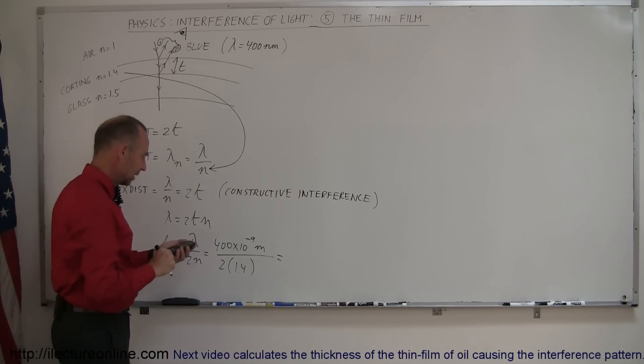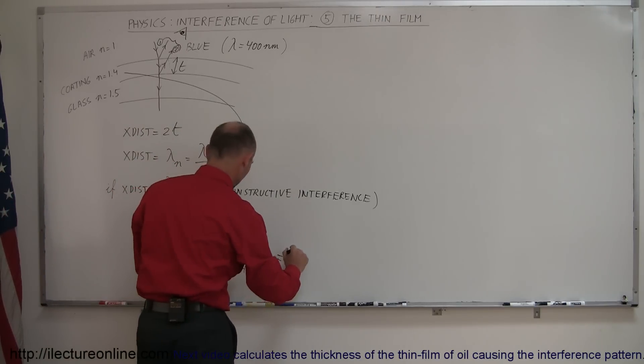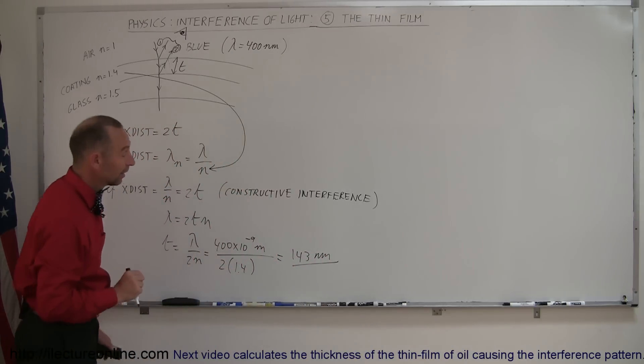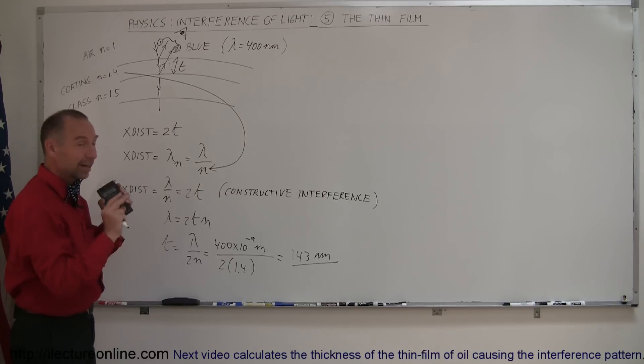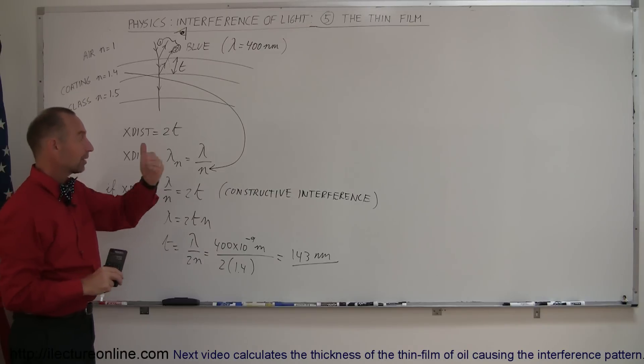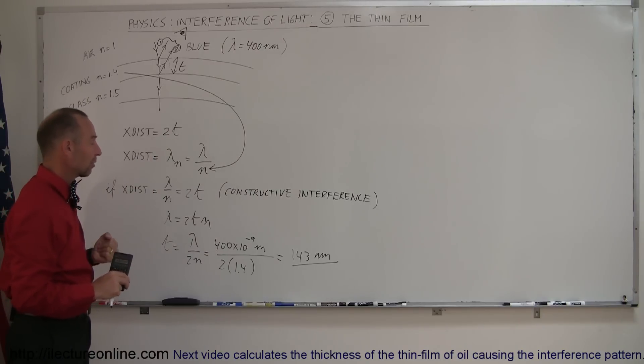That means we have to have a coating that has a thickness of 143 nanometers. Now that's not a lot, that's a very thin coating, and you could probably look at the glass and not really see it, but it's there, they put that on there, and something like that will allow the blue light to be reflected off windshields, and the rest of the light to be transmitted through the windshields. It's a very clever invention.